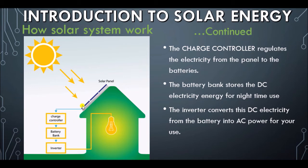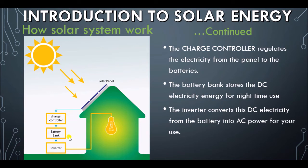Without the charge controller, this electricity would go straight to your battery for storage. But the battery bank may be damaged if you keep feeding it electricity without regulation. So this charge controller knows when the power from the panel is too high for the battery. The charge controller also knows when the battery is fully charged and will cut off power, or in some designs transfer it straight to the inverter and to your home. We will still look at this charge controller in our subsequent lessons.